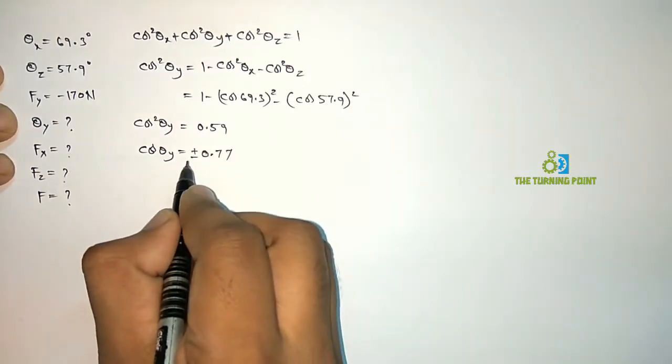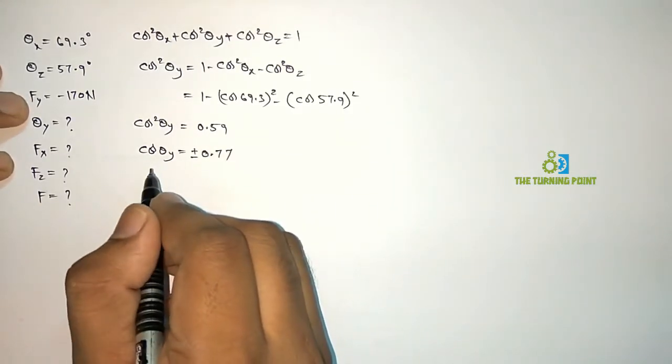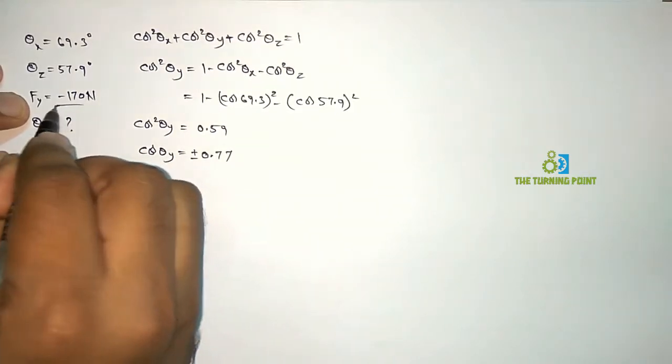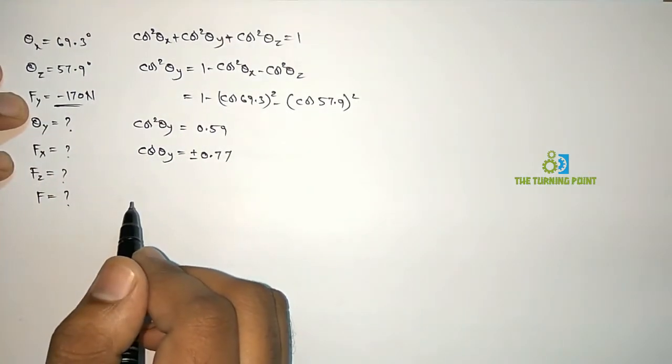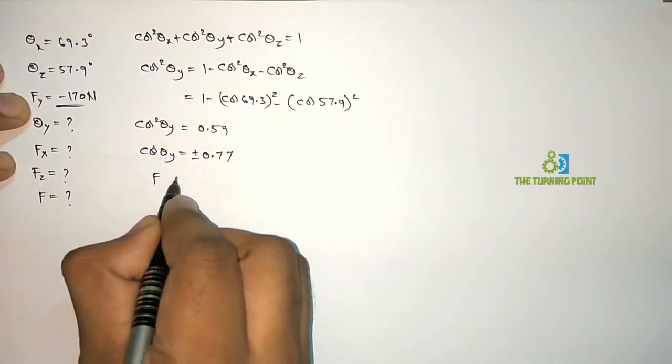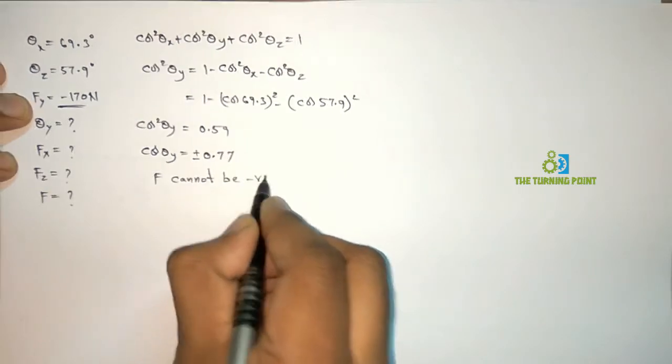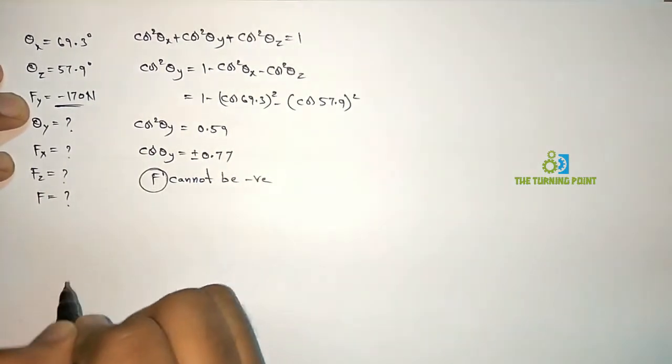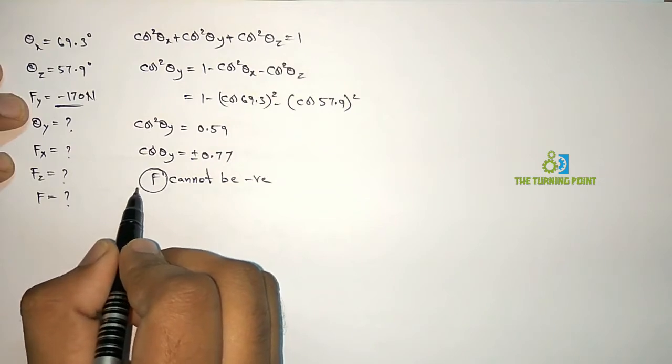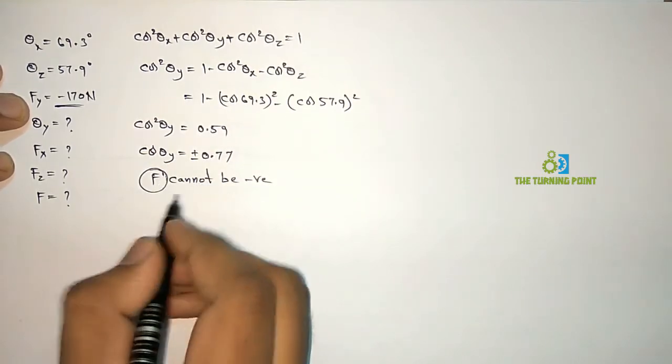How to find it? It is positive or negative means by the given Fy component. Given Fy is negative, so here it is given as negative. Force F cannot be negative. The magnitude of force F cannot be negative. Here F means magnitude of force. For making F positive, Cos theta y should be negative.